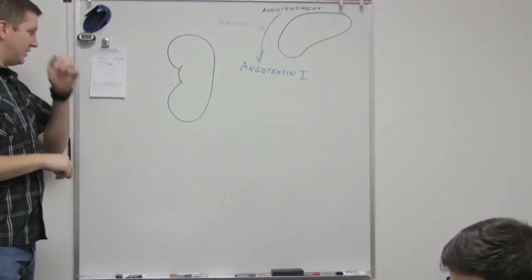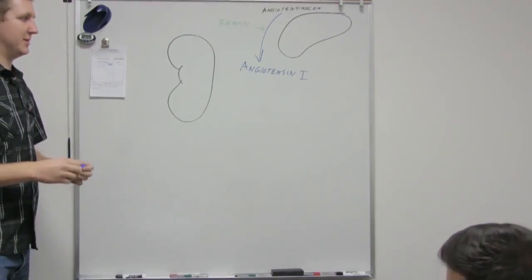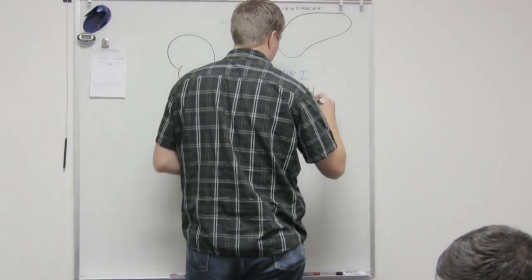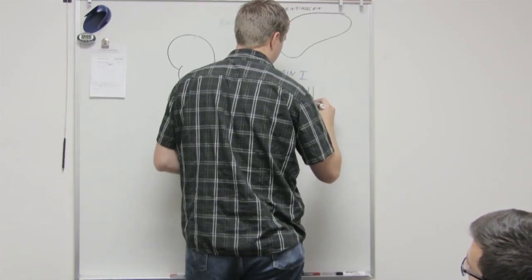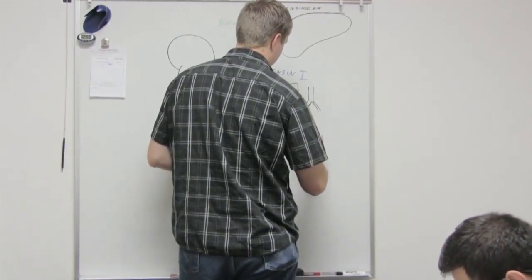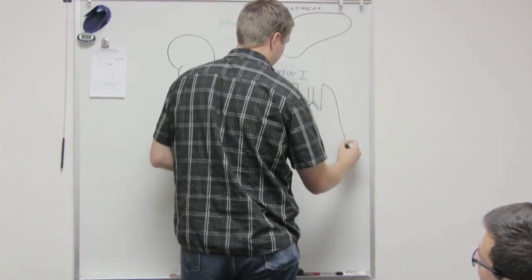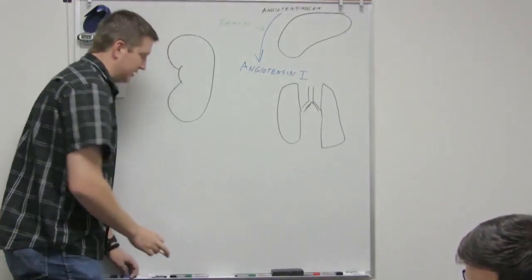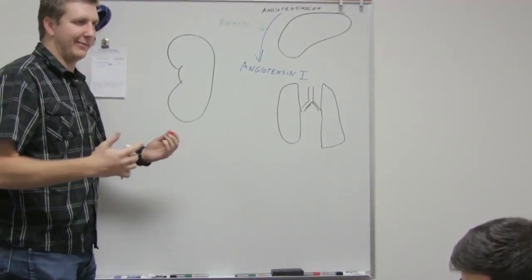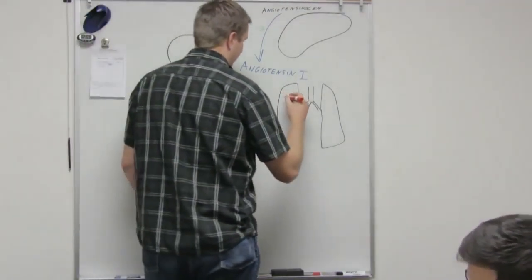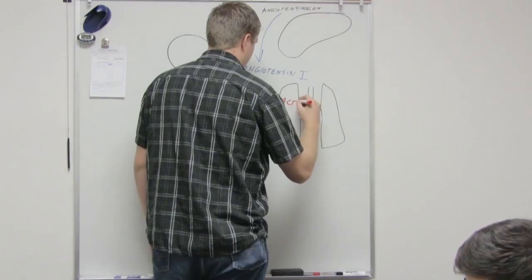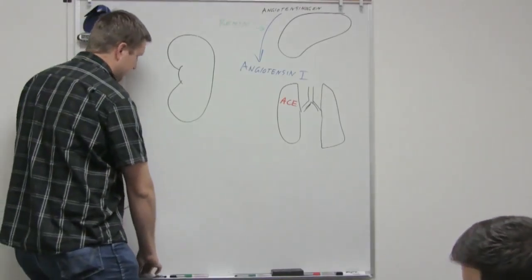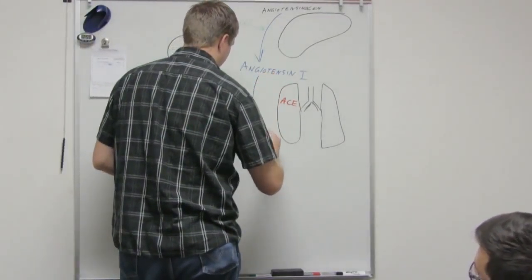So angiotensin one doesn't do anything yet, it still has one more step before it becomes active. So in the lungs, I've drawn better lungs in my day, but in the lungs we have the angiotensin converting enzyme, clever how they name that one right, or the ACE enzyme. So the ACE enzyme converts angiotensin one into angiotensin two.